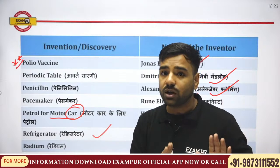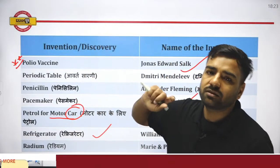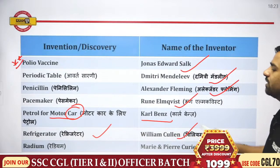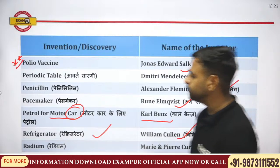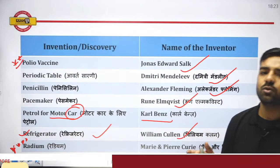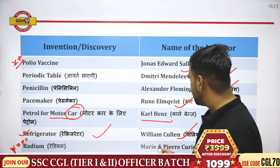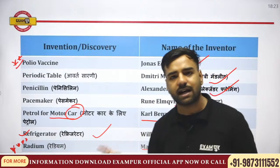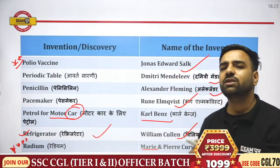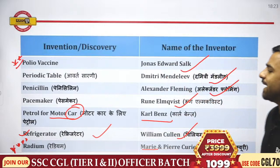Refrigerator is used for cooling. The word 'cooling' sounds similar to 'Cullen,' so William Cullen discovered the refrigerator. Radium is very important — four stars here. Radium was discovered by Marie Curie and Pierre Curie, who were husband and wife. Marie Curie is the one who received the Nobel Prize more than once — this is asked in examinations.